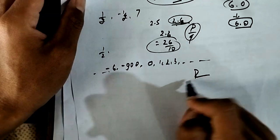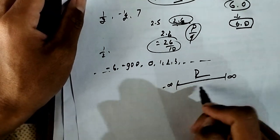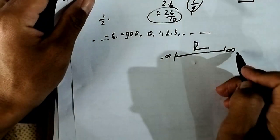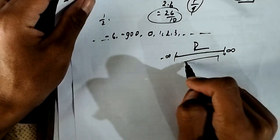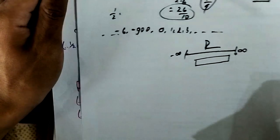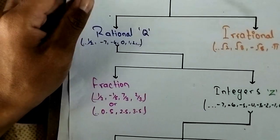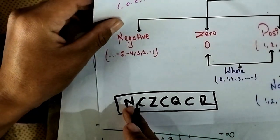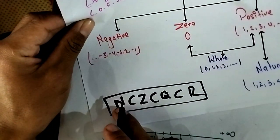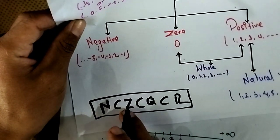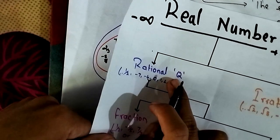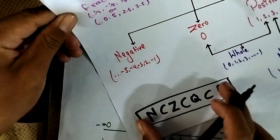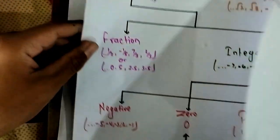The real number spans from minus infinity to plus infinity. We can supply any number and it will exist on the real number line. Now, the subset relationship: natural numbers are a subset of integers, integers are a subset of rational numbers (Q), and rational numbers are a subset of real numbers (R). We use the subset symbol (⊂) to show this: N ⊂ Z ⊂ Q ⊂ R.